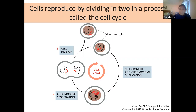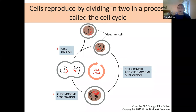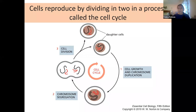Certain environmental cues may trigger a sharp increase in pro-growth signals, signaling cells to replicate and divide. Other times there may be a nutritional deficit or some other environmental factor that makes the environment not amenable for cell survival. In that case, you'll have inhibitory signal spikes telling the cell not to waste energy on replication and division.